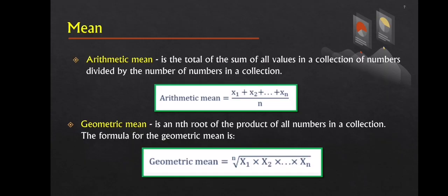There are multiple ways to calculate the mean. Here are the two most popular ones: the arithmetic mean and the geometric mean. Arithmetic mean is the sum of all the values in a set of numbers divided by the number of numbers in a set. It is computed in the following manner, as shown in this slide. Next is the geometric mean, which is the nth root of the product of all the numbers in a set. The geometric mean formula is as follows.